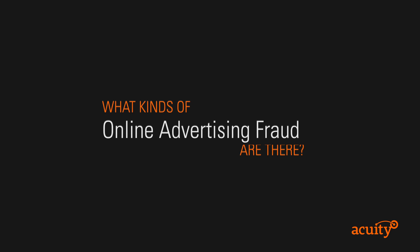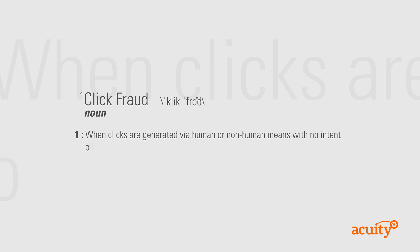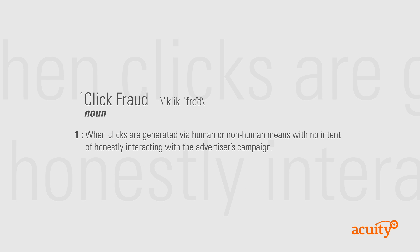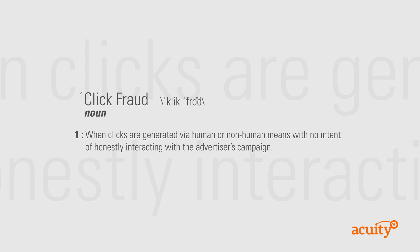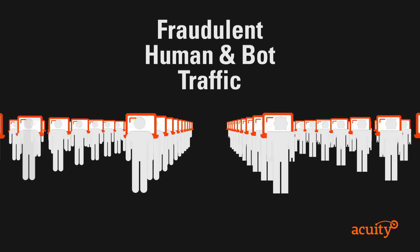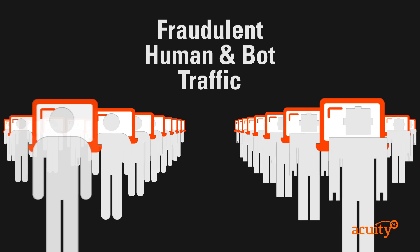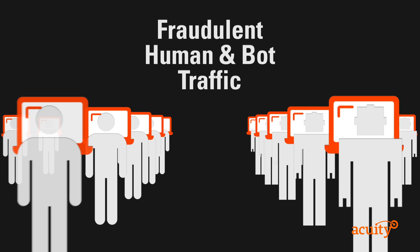What kinds of fraud are there? Click fraud. Click fraud occurs when clicks are generated via human or non-human means with no intent of honestly interacting with the advertiser's campaign. Click fraud is the most prevalent type of online advertising fraud, coming in as many as 18 different forms. Invalid clicks can come from both people and bots, and while their intent may vary, invalid clicks definitely skew campaign performance for advertisers.